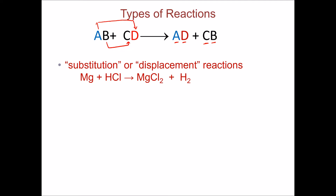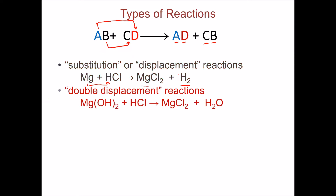The first type is called substitution or single displacement reaction, where a metal displaces hydrogen in the acid, making a metal salt and releasing hydrogen as a pure element. The second type is double displacement reaction, where the cation of the first substance combines with the anion of the second one, while the anion combines with the cation of the second one.